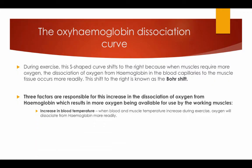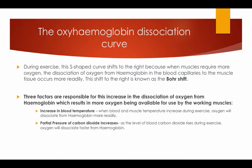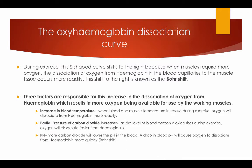An increase in blood temperature: when blood and muscle temperature increases during exercise, oxygen will dissociate from the haemoglobin more readily. Partial pressure of carbon dioxide increases: as the level of blood carbon dioxide rises during exercise, oxygen will dissociate faster from the haemoglobin. pH: more carbon dioxide will lower the pH in the blood, and a drop in blood pH will cause oxygen to dissociate from the haemoglobin more quickly — the Bohr shift.